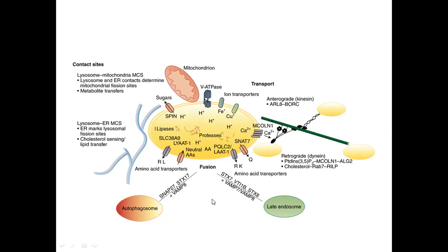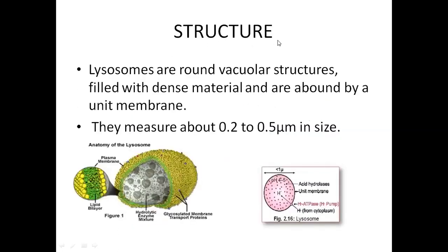Lysosomes are round vacuolar structures with a size of around 0.2 to 0.5 micrometers. Inside the lumen there are acid hydrolases. The unit membrane structure consists of a lipid bilayer and a glycosylated membrane to protect from the lytic enzymes present inside the lysosome.